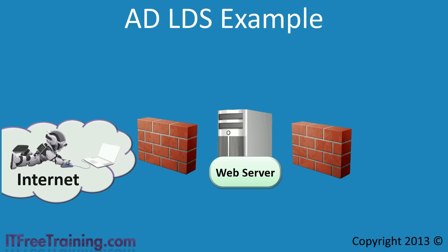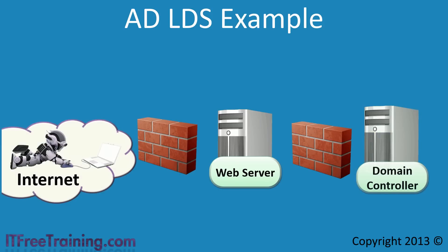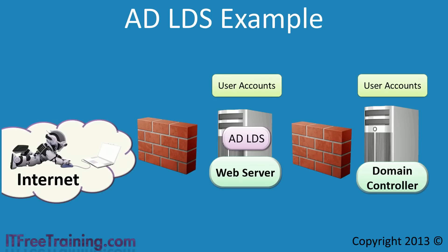The easiest way to achieve this would be to make the web server a domain controller. However, making the server a domain controller — even a read-only domain controller — presents a security risk if the perimeter network were compromised by a hacker. To get around this, you install the domain controller on the internal company network and install Lightweight Directory Services on the web server. The domain controller can then replicate user account information to the web server, and other Active Directory data does not need to be replicated, keeping it safe from attack.